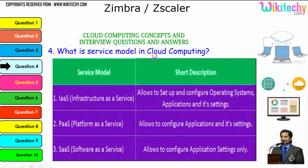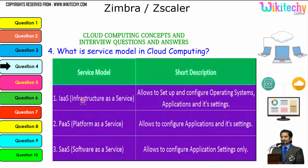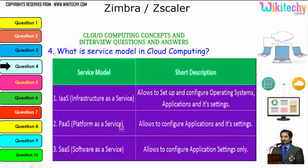The question is: what is the service model in cloud computing? The three major service models are: Infrastructure as a Service, which allows you to set up and configure the operating system, applications, and settings — you are given a server and can put whatever you want on it. Platform as a Service allocates a specified operating system and you can install any applications and settings. Software as a Service gives you a software environment where you can do whatever application settings you want.